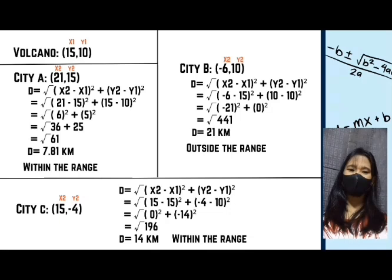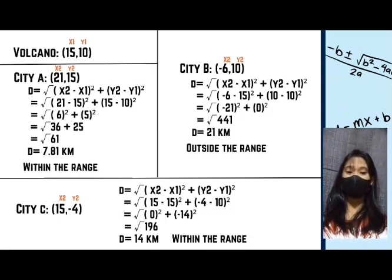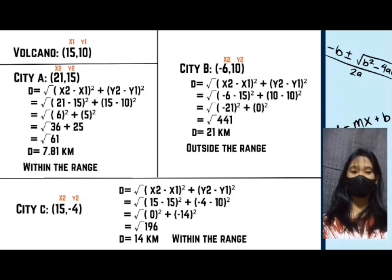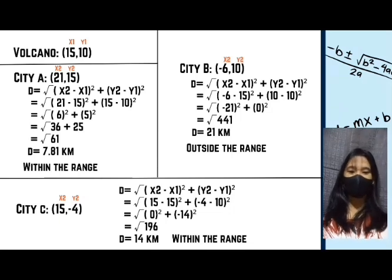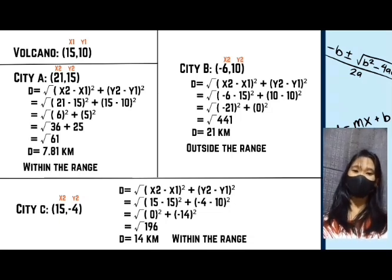To find the distance of City A from the volcano: x₁ = 15, y₁ = 10, x₂ = 21, y₂ = 15. Substituting into the formula: D = √[(21 - 15)² + (15 - 10)²]. So 21 - 15 = 6 and 15 - 10 = 5. Then 6² = 36 and 5² = 25. So 36 + 25 = 61, and the square root of 61 is 7.81.